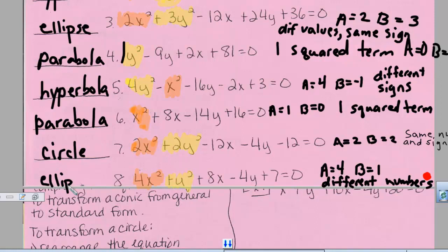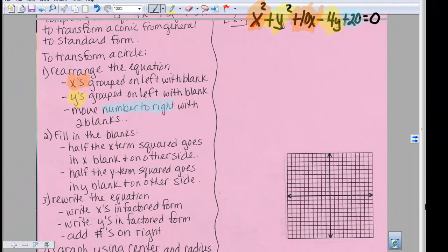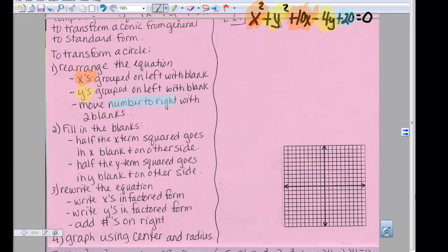We have just classified the following conics or the preceding conics. Now let's go to flap seven. In flap seven, we are going to actually take a conic in general form. We're going to transform it to standard form to graph a circle and get our center and radius.